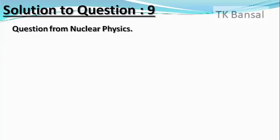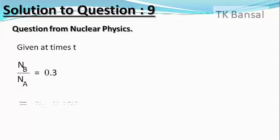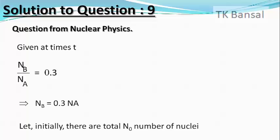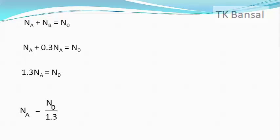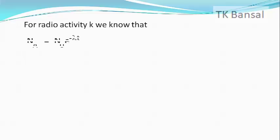Obviously this is a simple question from nuclear physics. Given at time t, N_B/N_A = 0.3, so N_B = 0.3 N_A. Let initially at t = 0 the total number of nuclei be N₀, so N_A + N_B = N₀, giving N_A + 0.3 N_A = N₀, or 1.3 N_A = N₀, therefore N_A = N₀/1.3. For radioactive decay, N_A = N₀ e^(−λt), so N₀/1.3 = N₀ e^(−λt).